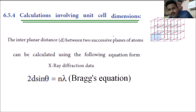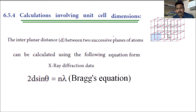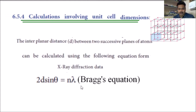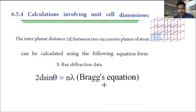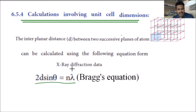In this video we are going to learn about Bragg's equation. Bragg's equation is a very small equation — in your textbook the question comes for two marks. We are explaining it in a brief manner. Bragg's equation is: n lambda is equal to 2d sin theta, or equivalently 2d sin theta is equal to n lambda.